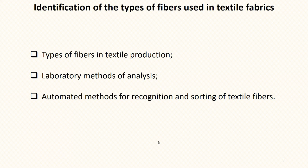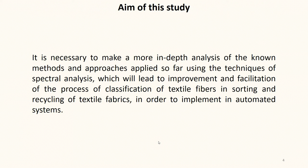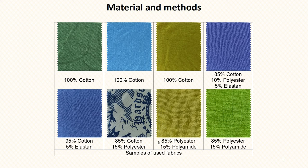The aim of this study is to make a more in-depth analysis of the known methods and approaches, using the techniques of spectral analysis, which will lead to improvement and facilitation of the process of classification of textile fibers in sorting and recycling of textile fabrics, in order to implement in automated systems. Textile fabrics containing cotton, polyester, elastin, polyamide and various combinations between them are used. The figure shows in general form samples of the fabrics used.